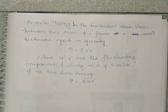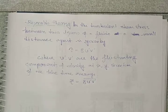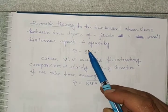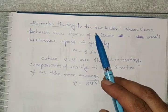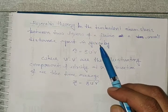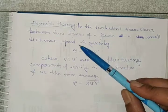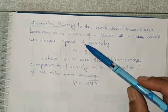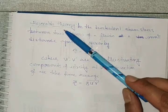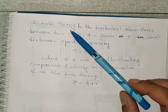Hello students, today we will discuss the Prandtl universal velocity distribution equation for turbulent flow. Before going to the derivation, certain terminologies are very important. Reynolds gives one theory for turbulent flow.